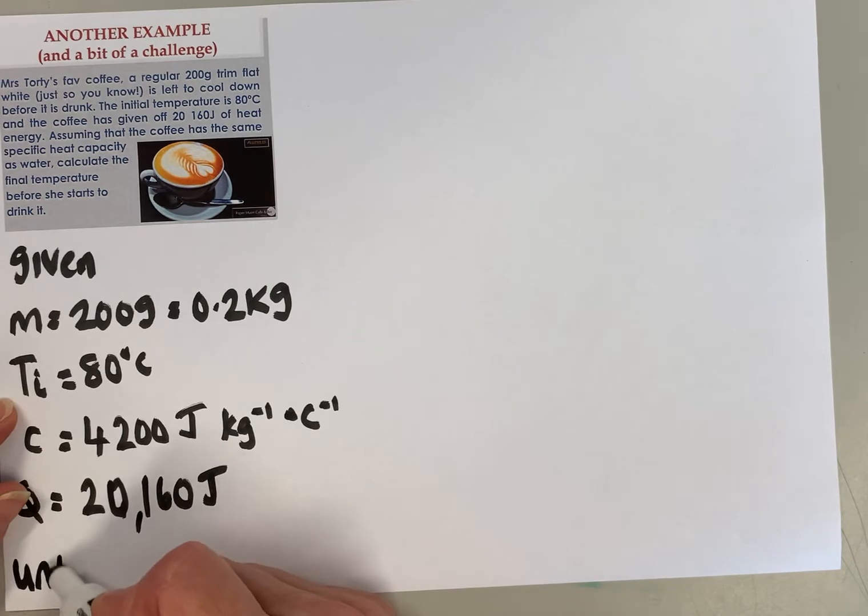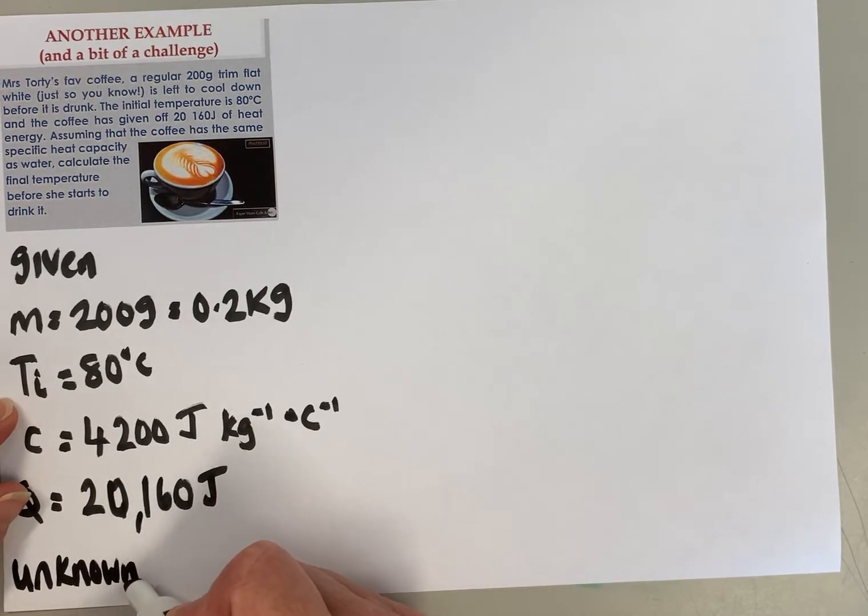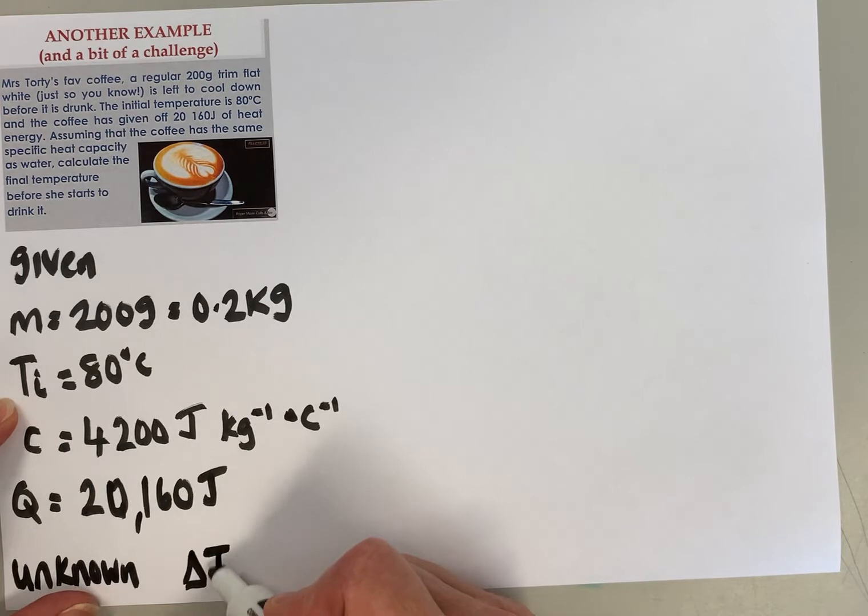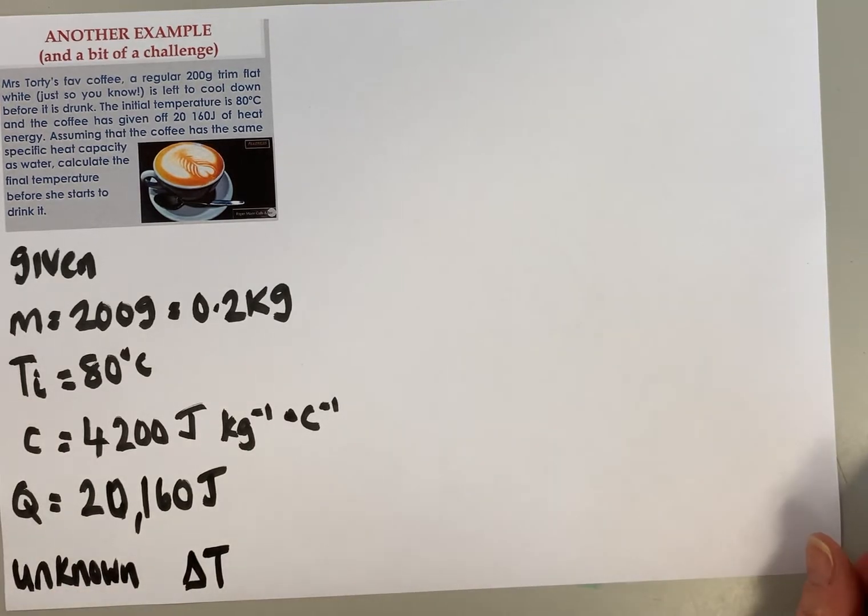The unknown is the change in temperature. We actually need the final temperature, but if we calculate the change in temperature first, then we can calculate the final temperature from that.